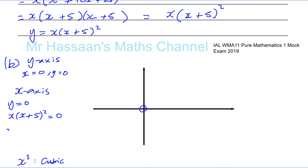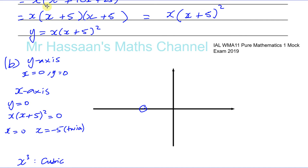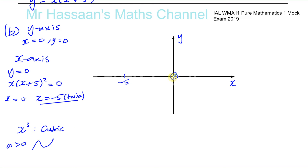So you have x equals zero and (x + 5)² equals zero, giving x equals minus five - you can think of it as x equals minus five twice, a repeated root. When you have a squared bracket like this, it's called a repeated root. With a repeated root, the curve doesn't cut through the x-axis at that point - it turns on the x-axis. So this curve cuts through at the origin and turns at minus five.